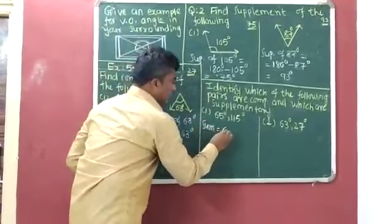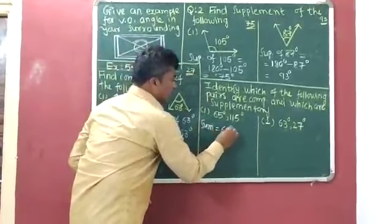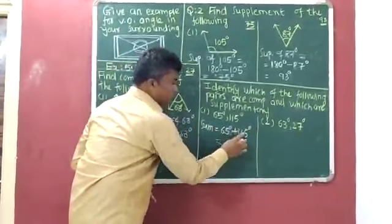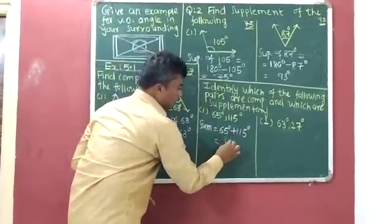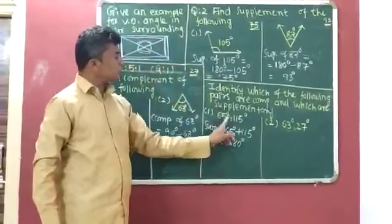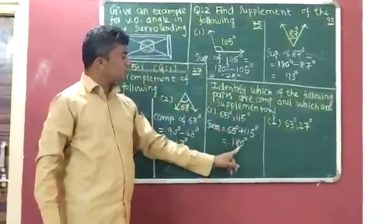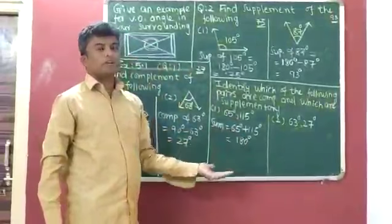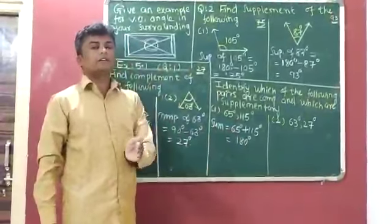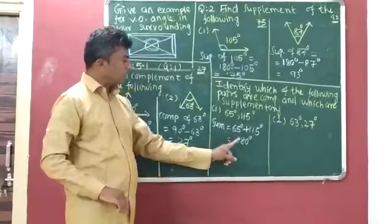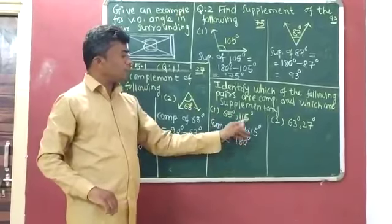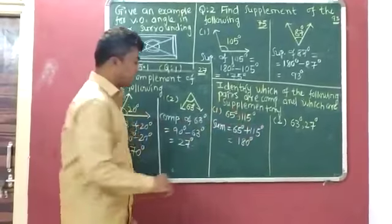We will find the sum of measures of both angles. Sum is equal to 65 degrees plus 115 degrees, and its answer is 180 degrees. Here the sum of measures of both angles is 180 degrees, and we know that if the sum of measures is 180 degrees, the given pair is supplementary. So 65 degrees and 115 degrees is a pair of supplementary angles.